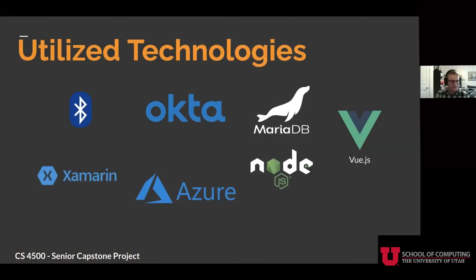The technology we've been using to create this product has been centered around a mobile app created in Xamarin, connected to the device over Bluetooth Low Energy. We are using Okta to manage users and to do authentication and authorization. We have a Node Express API being accessed both from our website created in Vue.js and from the mobile app in Xamarin. To back up the data, we're using a MariaDB database. The API, the website, and the database are all deployed on Azure.